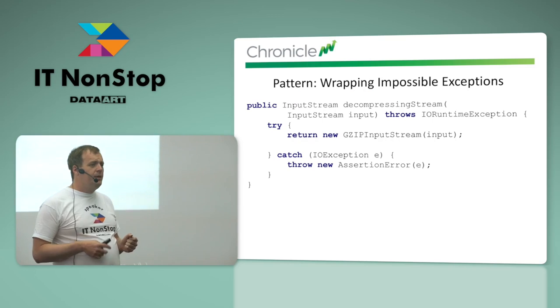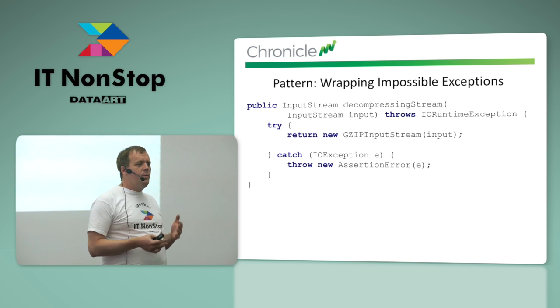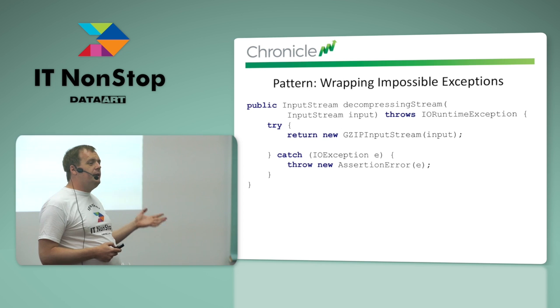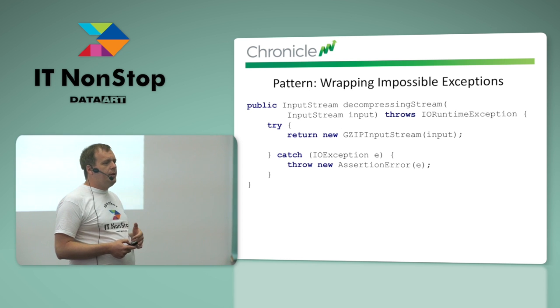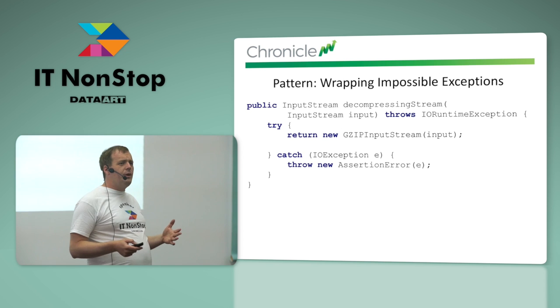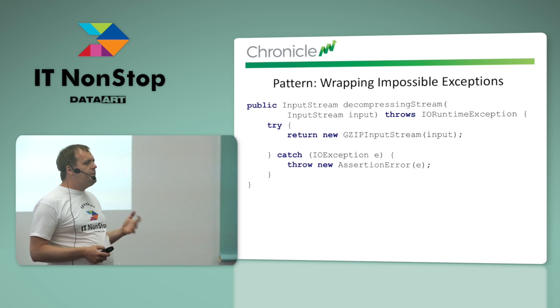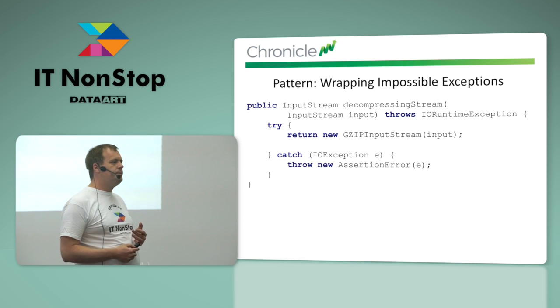When we have an exception we believe is not possible — for example, a method assumed to only work on in-memory streams, where an in-memory stream will never throw an IOException — we treat that as impossible and wrap it with an AssertionError. This is what assert throws when a condition fails. By wrapping it with an AssertionError, we're saying: something happened we thought was logically impossible. We do this in quite a few places.